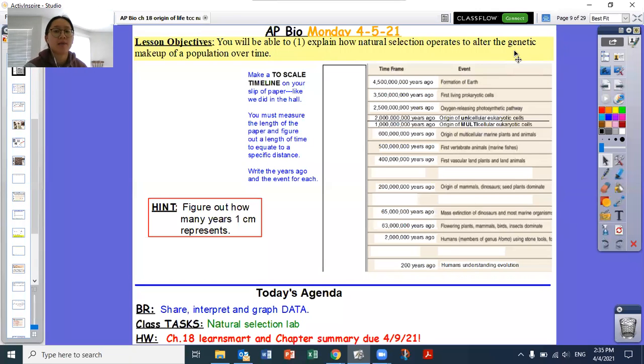All right, for today's class, you have two main things that you're going to be doing. One is going to be creating a timeline of the origin of Earth and then all of the major events that happened throughout the history of life until today or now.